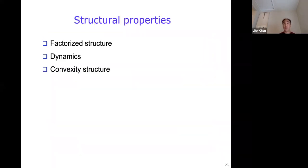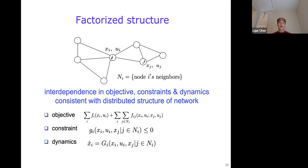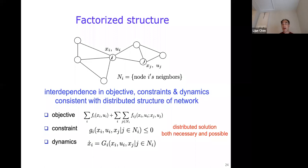My research brings together optimization, systems and control theory, and domain-specific knowledge for exploring the structures of underlying problems and systems and leveraging them for principled design of distributed control and learning. In particular, my work has mainly explored three structures of networked dynamic systems: factorized structure, dynamics, and convexity structure. Factorized structure refers to the fact that interdependence in objective, constraint, and dynamics of network systems are usually local, consistent with the distributed structure of the underlying network. For example, the objective is additive, with each term depending only on a single component or a pair of directly connected components. The constraint and dynamics at each component depend only on its neighbors in the network. This distributed and factorized structure implies that a distributed solution based on local information is both necessary and possible.